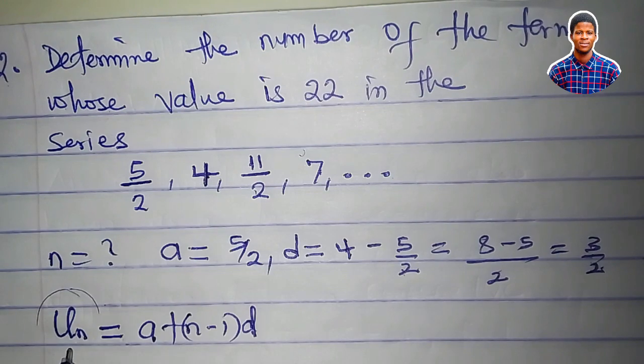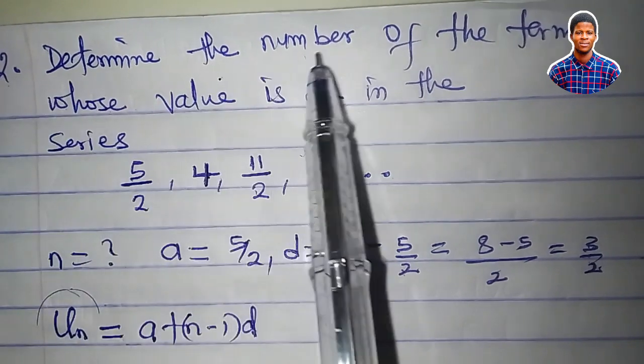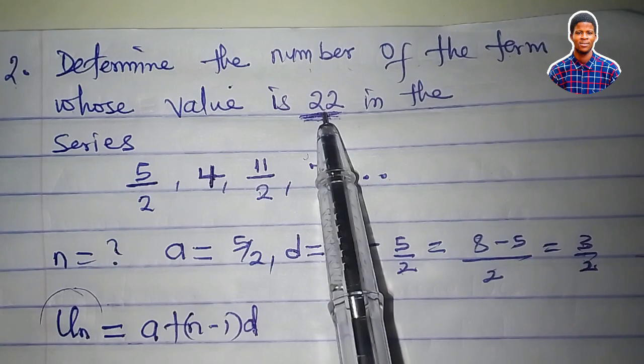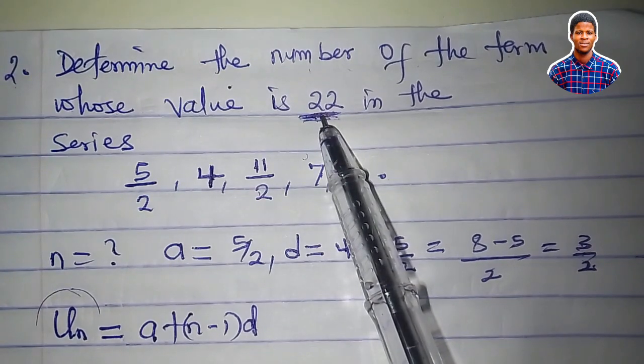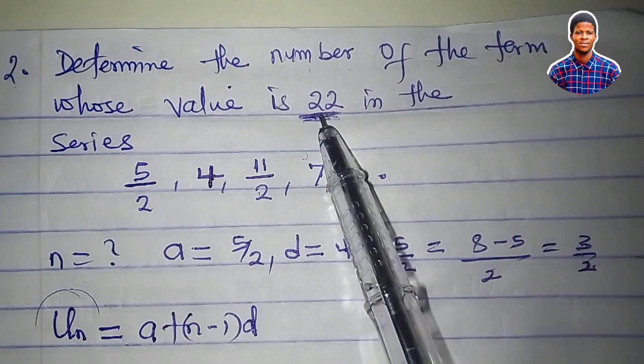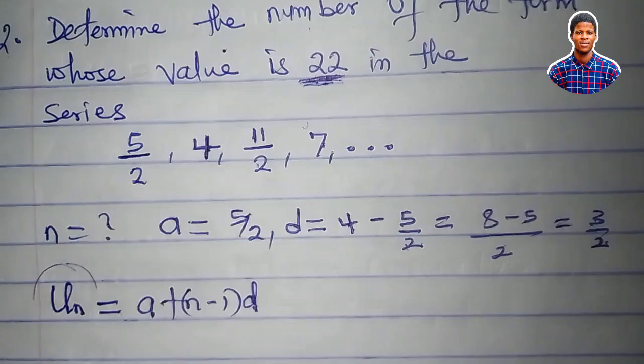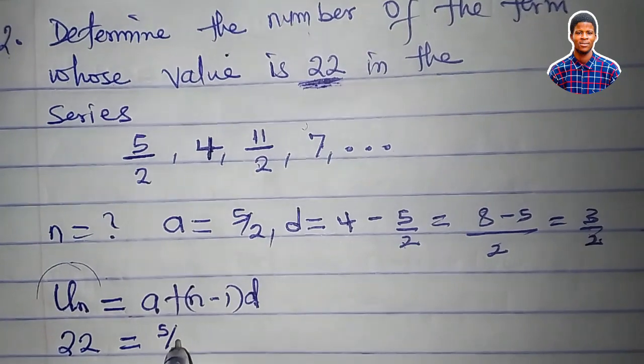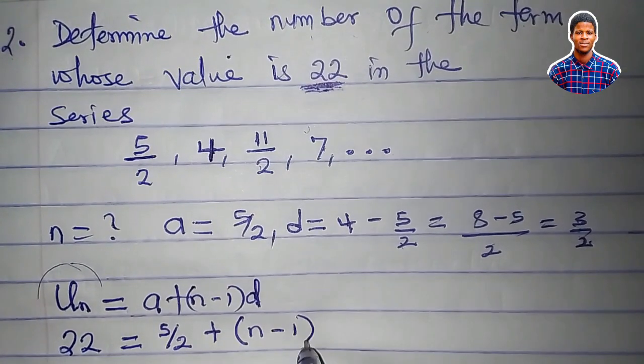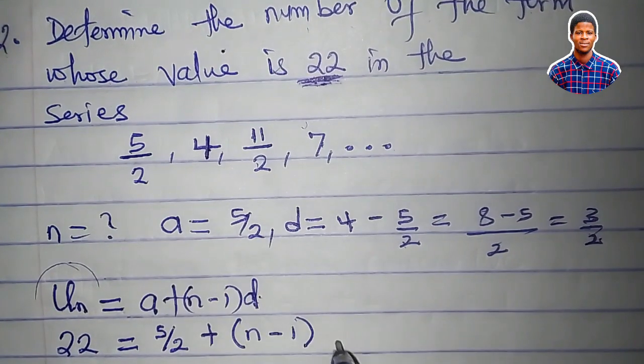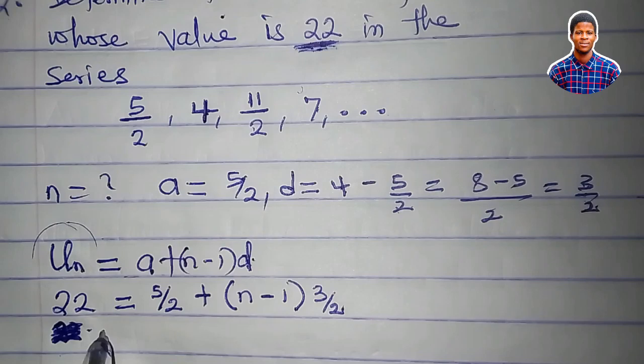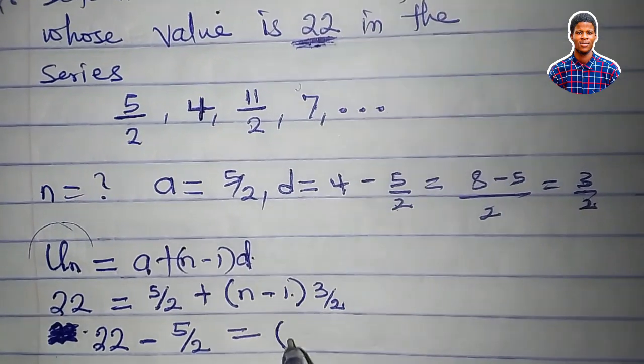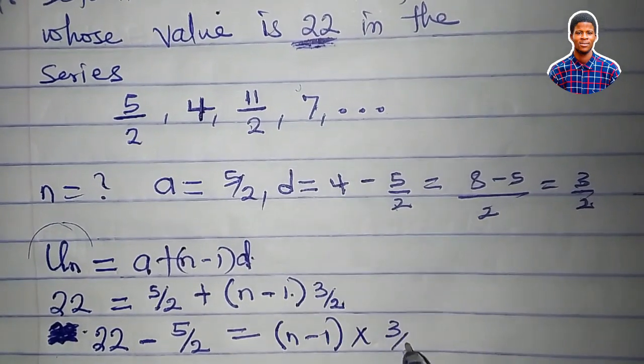This u sub n, what is it? They said, determine the number of the term whose value is twenty-two. That means the nth term is twenty-two itself. But what we are trying to look for is the number or the position of twenty-two in this series. The nth term is twenty-two. Twenty-two equals a, which is five over two, plus n minus one times the common difference, which is d, three upon two. So we have twenty-two minus five upon two equals (n minus one) times three upon two.